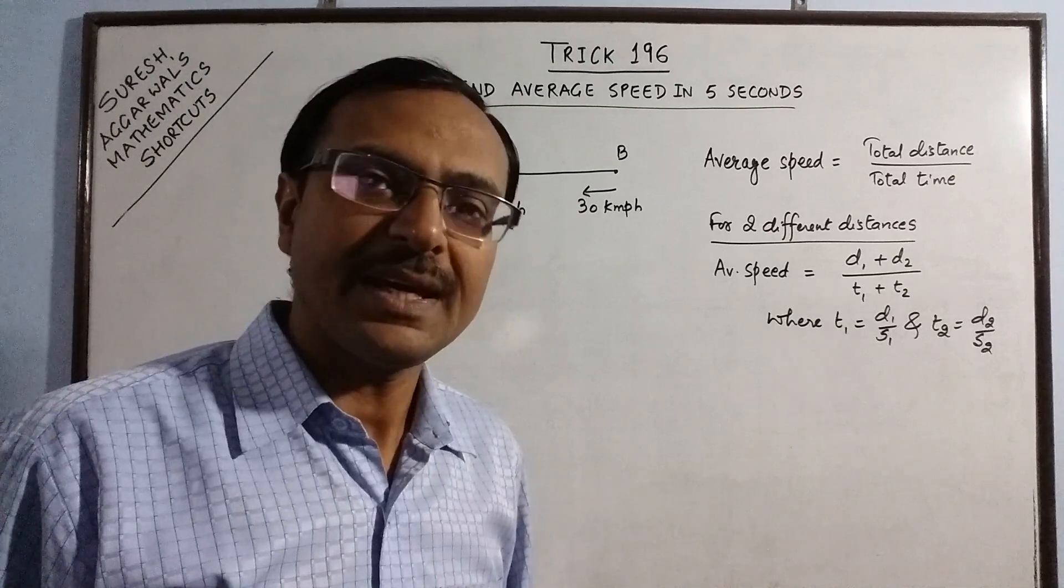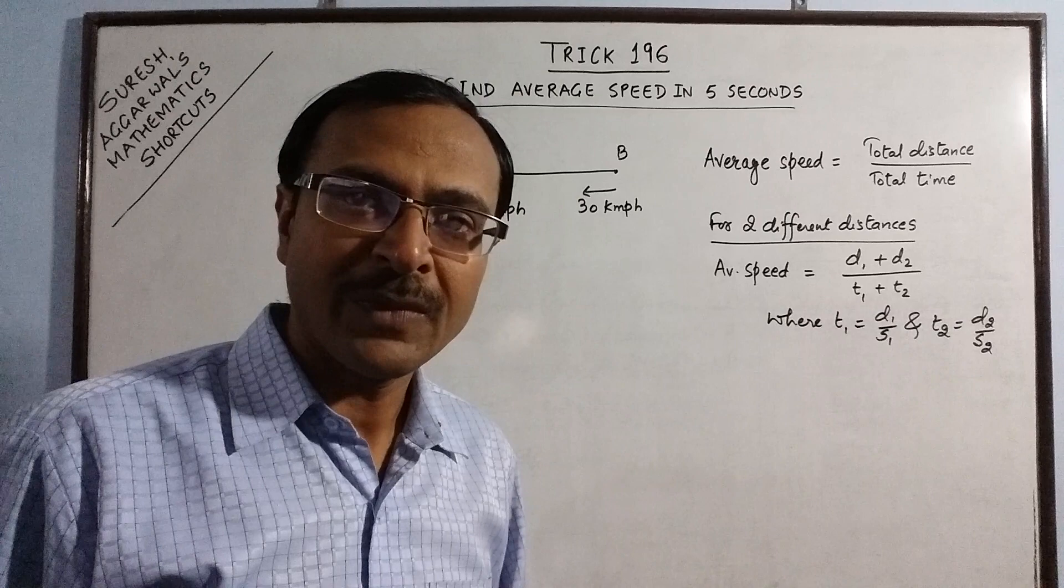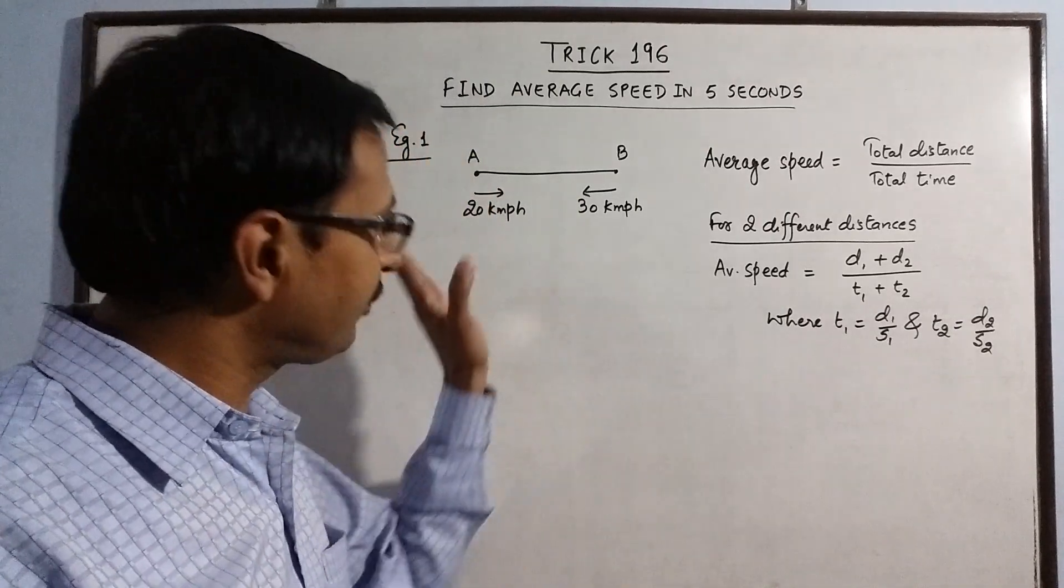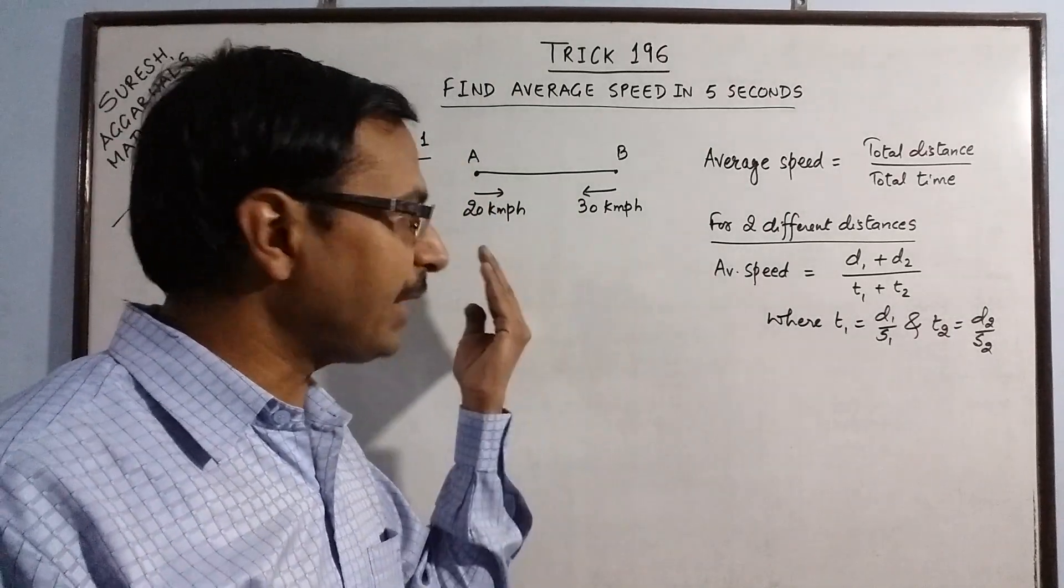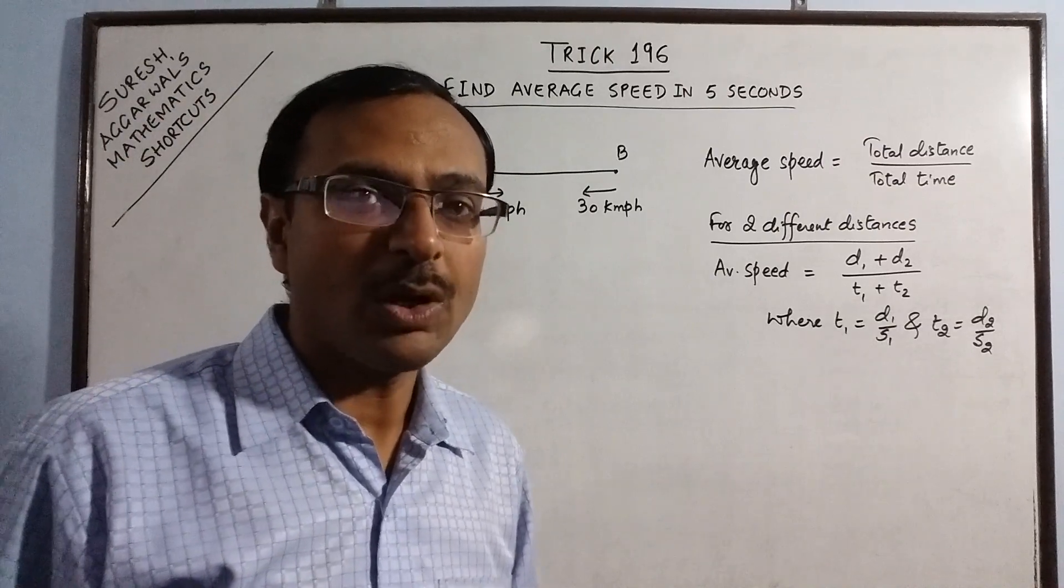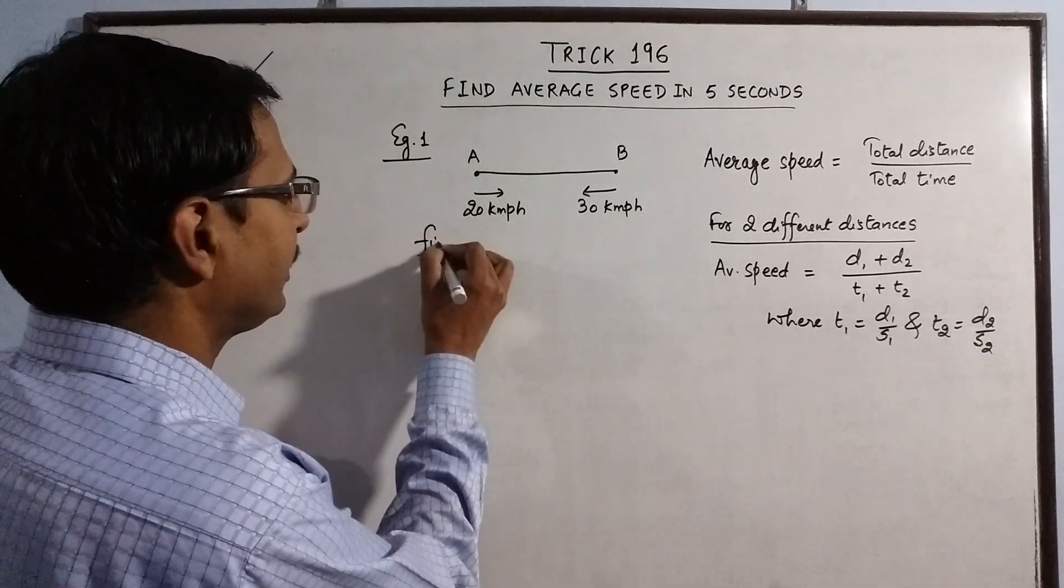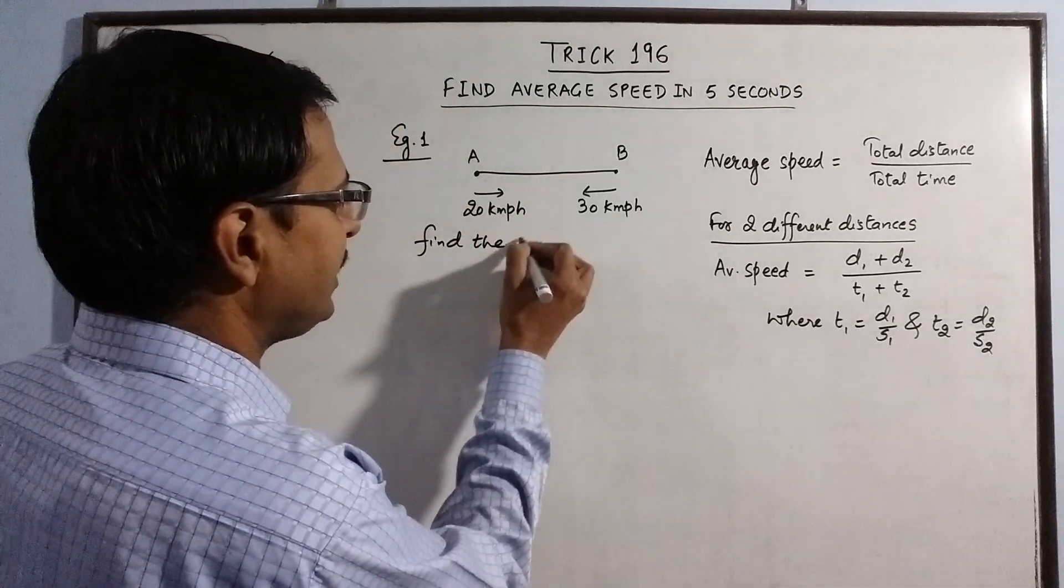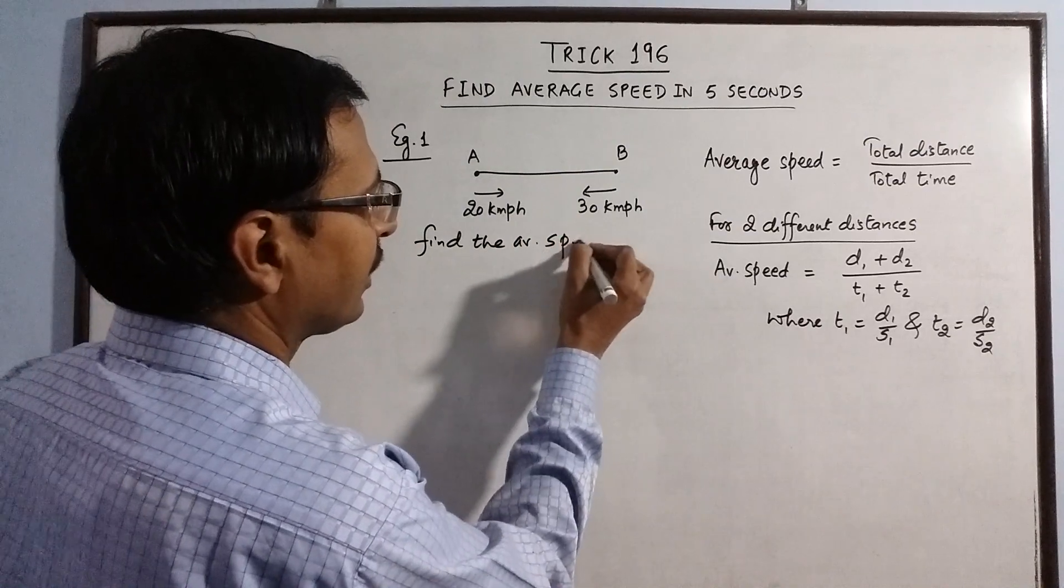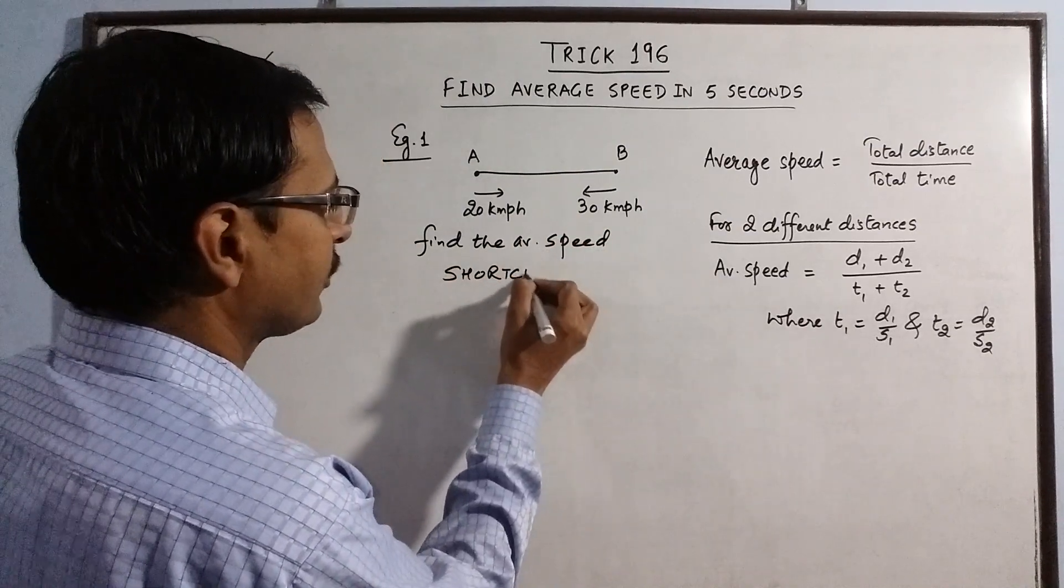Now, see while going from A to B the distance is AB and while coming back from B to A the distance is again AB. So, whenever there is a case when the distance covered in two cases is same then the average speed of going and coming back can be found out very easily using a small shortcut. Now, you need to find the average speed.